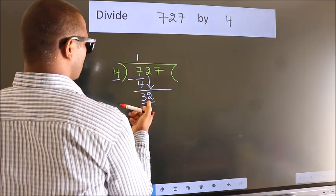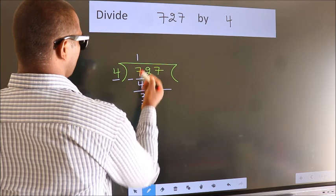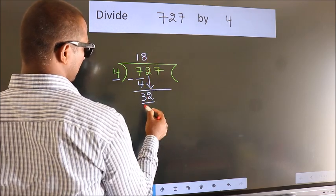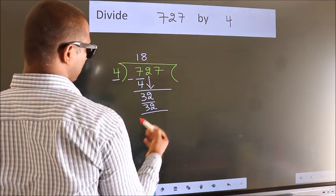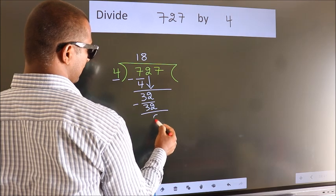When do we get 32 in the 4 table? 4 eights equals 32. Now we subtract and get 0.